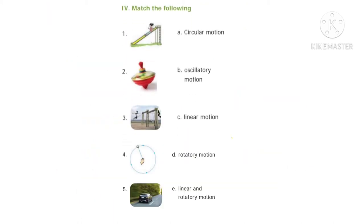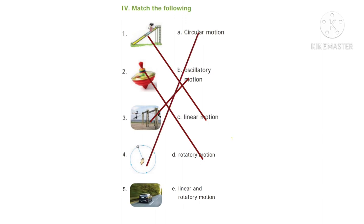Match the following. For the first picture, the correct answer is linear motion. For the second picture, the correct answer is rotatory motion. For the third picture, the correct answer is oscillatory motion. For the fourth picture, the answer is circular motion. For the fifth picture, the answer is linear and rotatory motion.